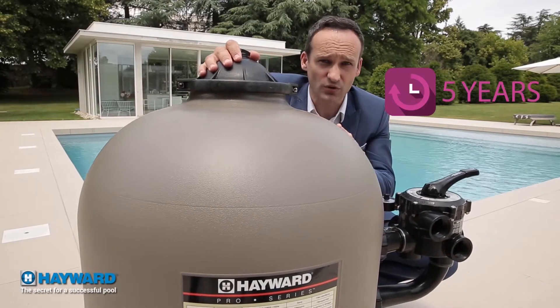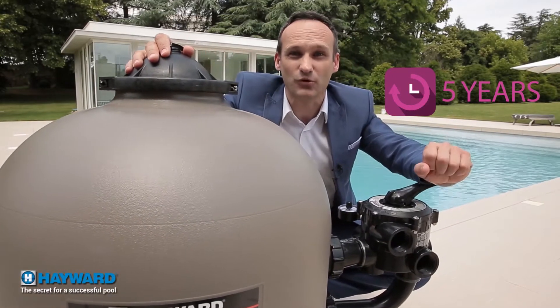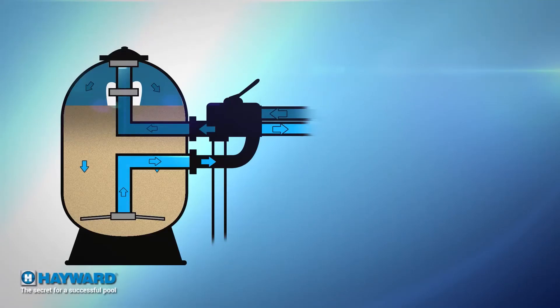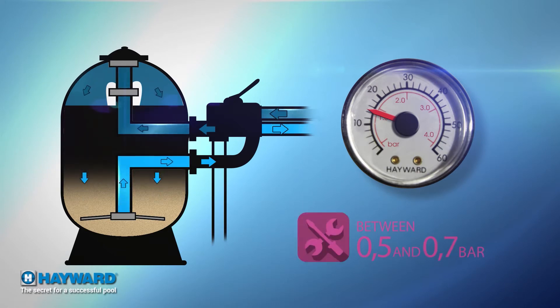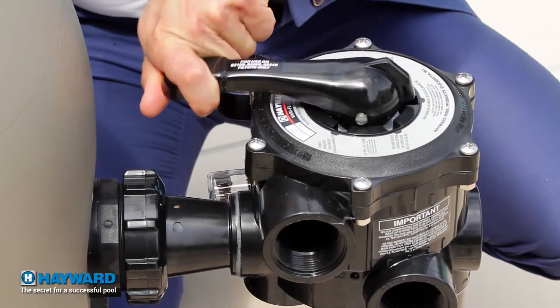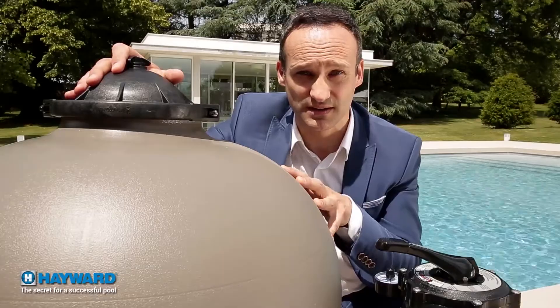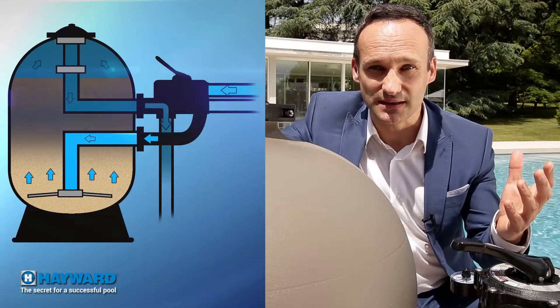Besides replacing the sand every five years or so, standard sand filter maintenance involves a backwash, which is rather costly in pool water. As the filter clogs, pressure increases — visible on the pressure gauge. When pressure rises 0.5 to 0.7 bars above normal, a backwash is needed. Backwashing reverses the direction of water flow to dislodge debris trapped in the sand. The pool water enters the filter, lifts and cleans the sand, then goes directly to the drains.